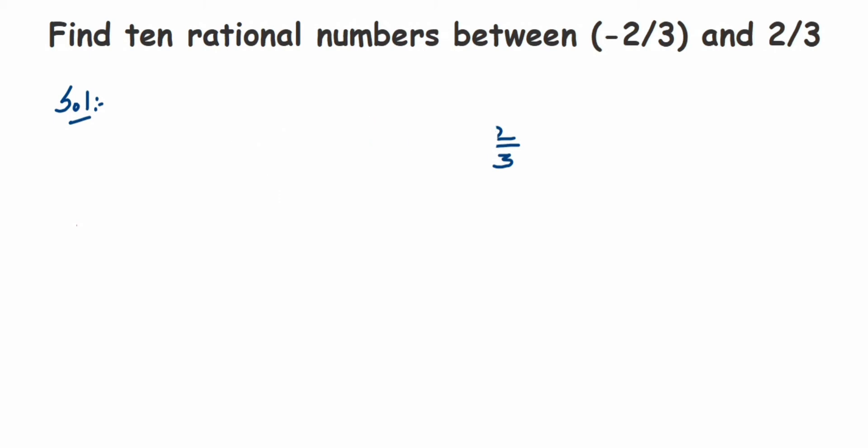What we are going to do is find equivalent rational numbers of these two numbers and then we can find them. So let's do that. Minus 2 by 3 is the given number.